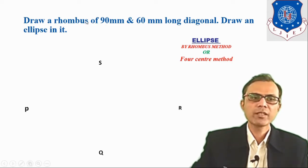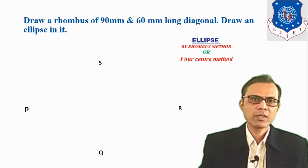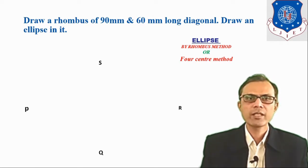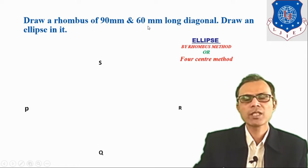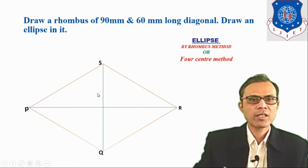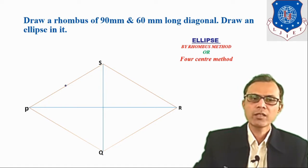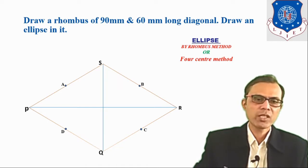The next method is the four-center method (concentric circle method). Draw a rhombus with 90 mm and 60 mm long diagonals and draw an ellipse inscribed in it. In the four-center method, we use four centers to draw the ellipse. The rhombus has two diagonals: PR as 90 mm and QS as 60 mm. Mark the midpoints of all four sides of the rhombus as A, B, C, and D — these are the midpoints of the sides of the rhombus.